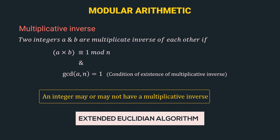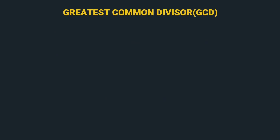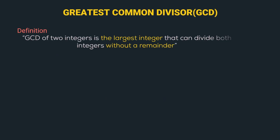But before understanding this, we need to understand what gcd is. The greatest common divisor of two integers is the largest integer that can divide both integers without a remainder. Let's understand using an example.